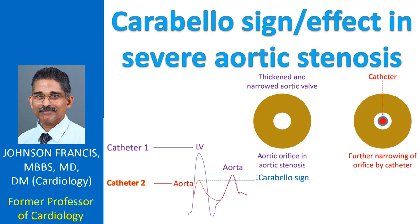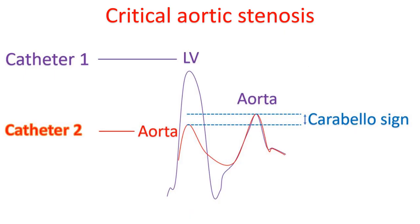Discussion on the Carabello sign or effect in severe aortic stenosis on cardiac catheterization. Blaise A. Carabello and colleagues described the Carabello effect as the change in arterial pressure when the catheter is pulled back from the left ventricle to the aorta in severe aortic stenosis.